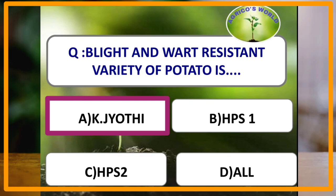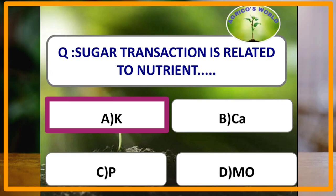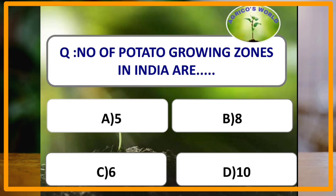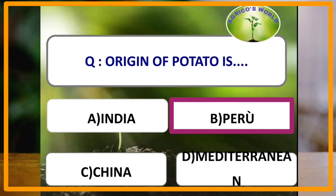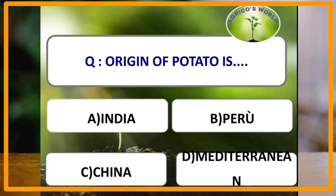Sugar translocation is related to the nutrient potassium. The number of potato-growing zones in India is five, that of wheat is six, and that of sugarcane is eight. The origin of potato is Peru, that is southwest America.